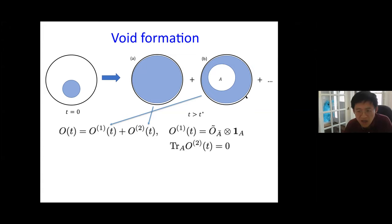To summarize the picture: if you look at the reduced density matrix for radiation R, it contains a trivial (identity) part and a non-trivial part controlled by void formation. These two density matrices exchange dominance at the Page time. Before the Page time the identity term dominates for all Rényi entropies; after the Page time the void formation term dominates. This resonates with the gravity side where different quantum extremal surfaces (and entanglement wedges) control the physics before and after the Page time. The remarkable point is that for chaotic systems the void formation part has universal behavior, allowing prediction without going into details of individual systems.